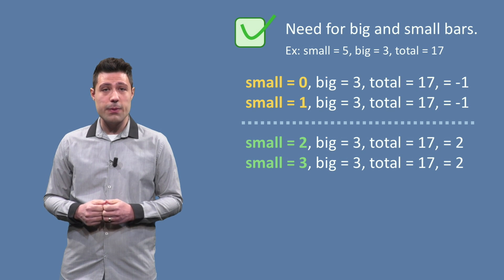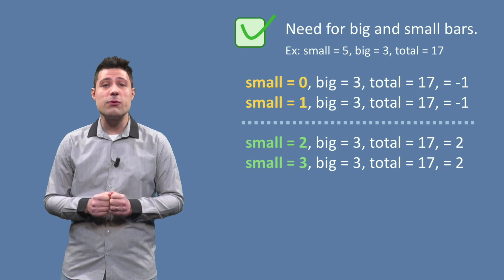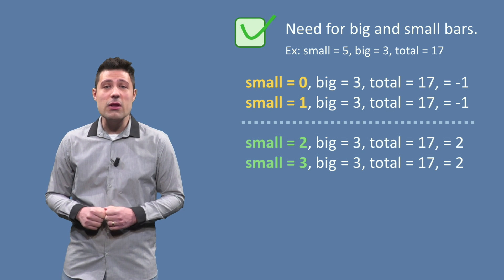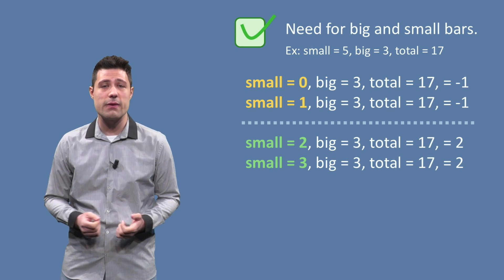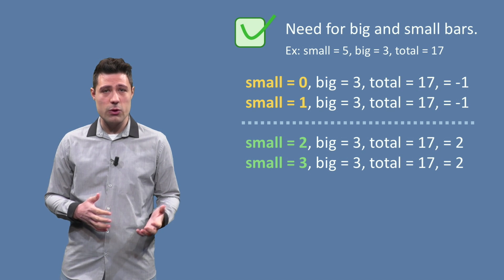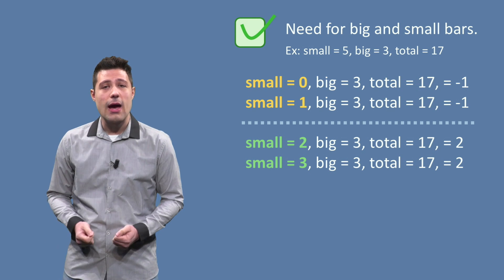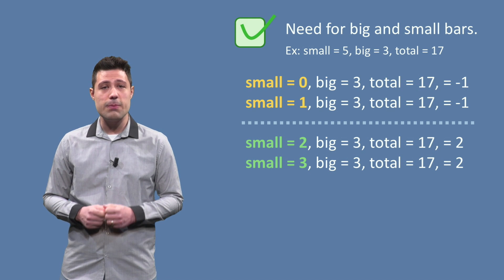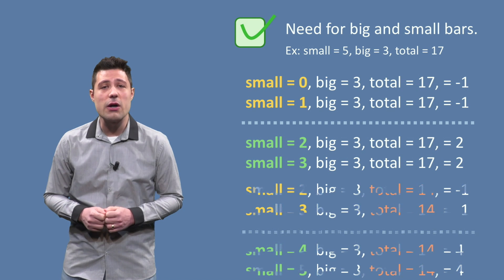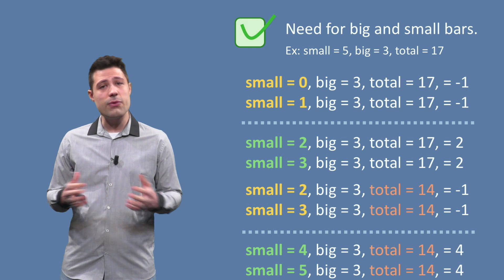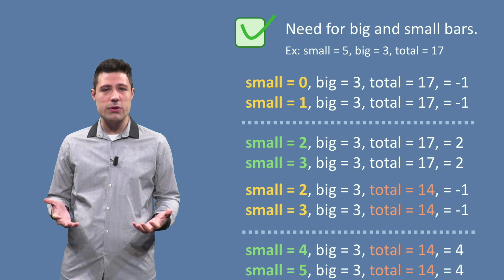But we can think of another boundary in this partition. Right now, if we take big equals 3 and total equals 17 as a starting point, the 3 big bars will be used and then we go for the small bars. However, there is another way of using big and small bars. You can partially use the big bars, meaning not using all of them, and then complement with small bars.